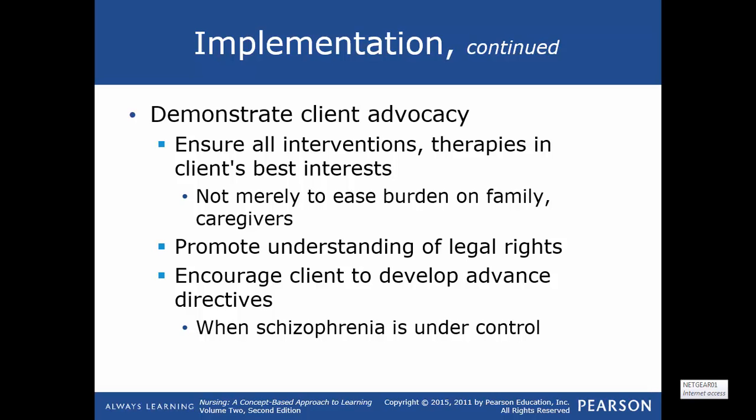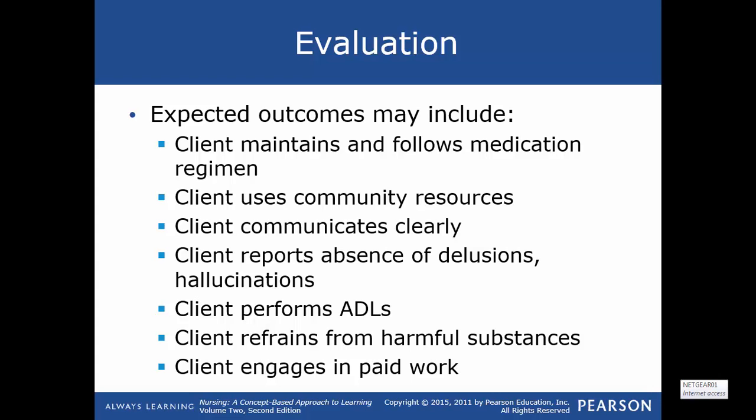Evaluation: expected outcomes include that the client maintains and follows their medication regimen, uses available community resources, communicates clearly, and transitions logically between topics. The client will report absence of delusions and hallucinations, be able to perform activities of daily living, refrain from harmful substances such as illicit drugs, alcohol, and nicotine, and engage in paid work in a structured setting. This concludes the overview of schizophrenia — if you have questions, please let me know and I will try to help clarify things for you.